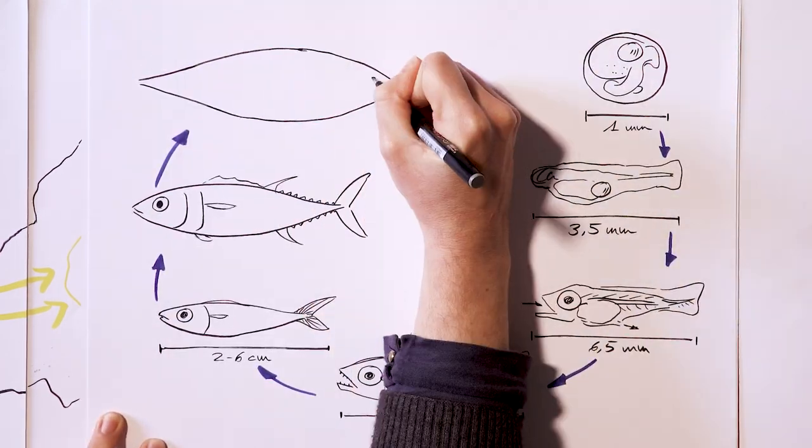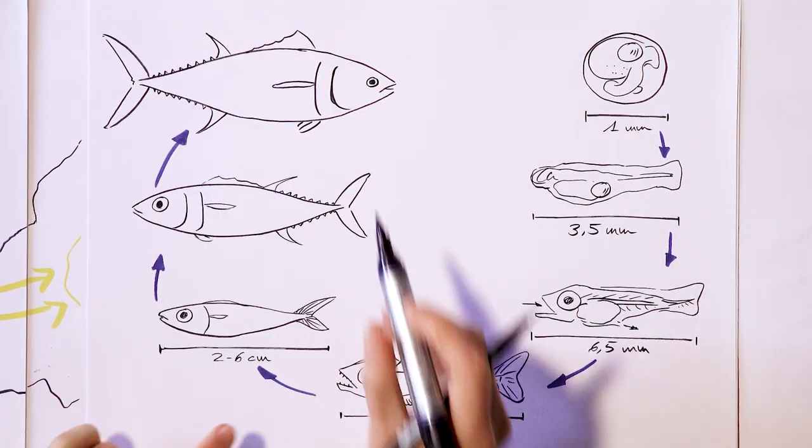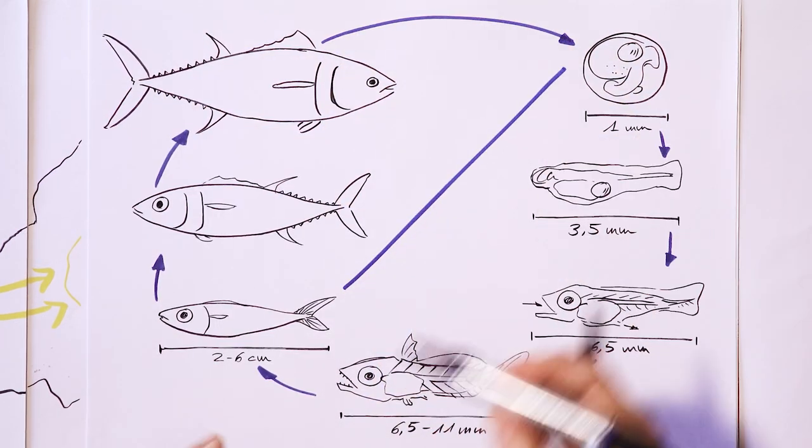The tuna will continue to grow throughout its life. It will be sexually mature in four to six years and that's when it will breed for the first time, completing its life cycle.